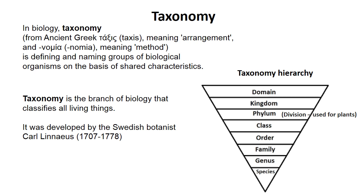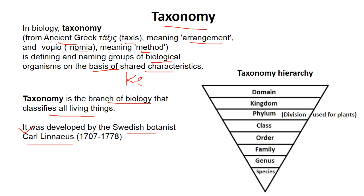First of all, we have to discuss taxonomy. Taxonomy is a Greek word — 'taxis' means arrangement and 'nomia' means method. So it is the arrangement method of biological organisms on the basis of their shared or key characteristics. Taxonomy is a branch of biology that classifies all living organisms. It was first developed by Swedish botanist Carl Linnaeus, also known as the father of taxonomy.